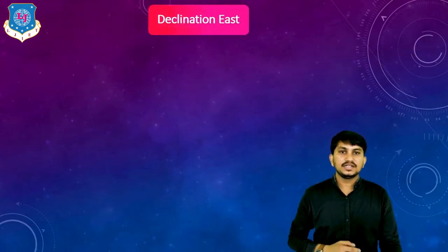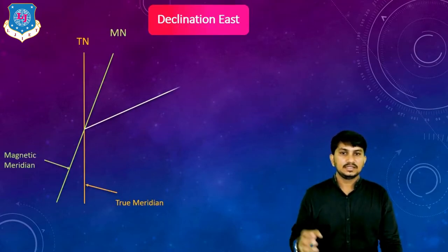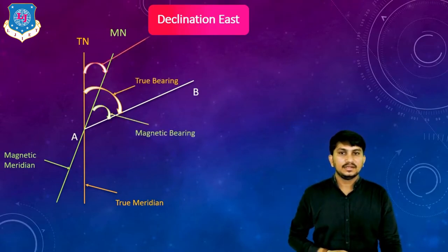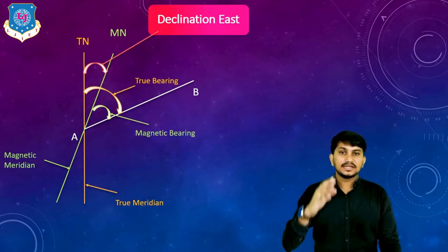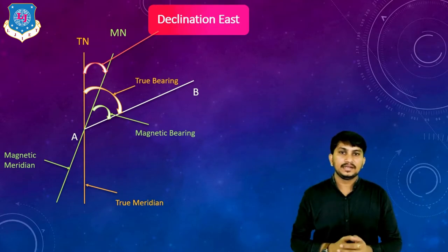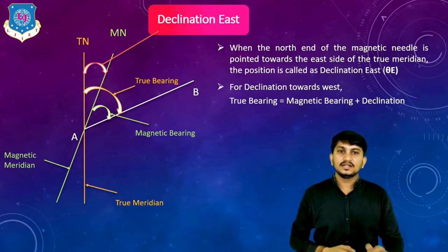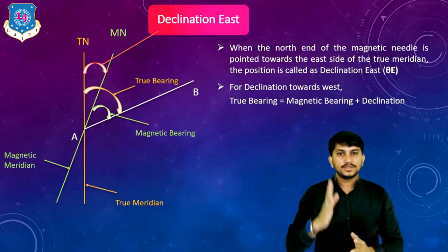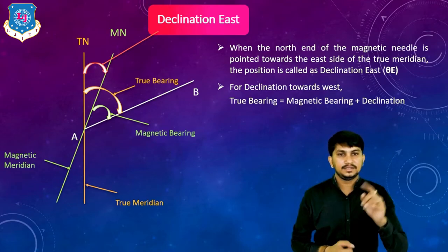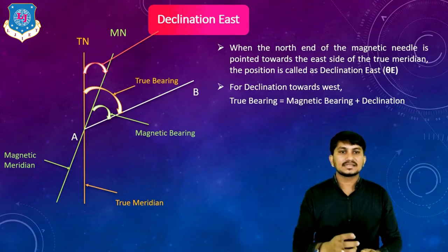For declination towards west, true bearing is equal to magnetic bearing minus declination west. Next type is declination east. If the magnetic north direction lies towards the east direction from the true meridian line, it is called as declination east. When the north end of the magnetic needle is pointed towards the east side of the true meridian, the position is called as declination east. It is also called as theta E. For declination towards east, true bearing is equal to magnetic bearing plus declination east.